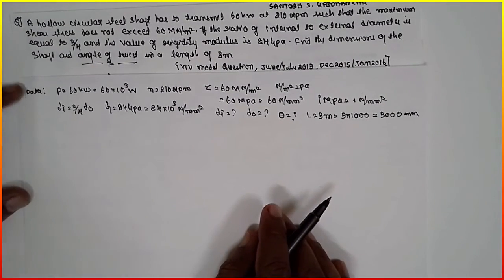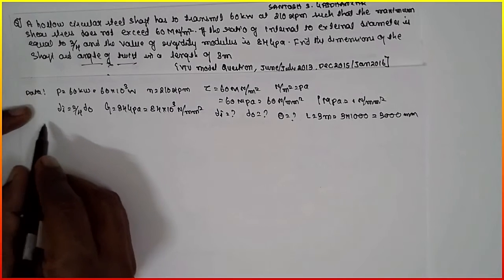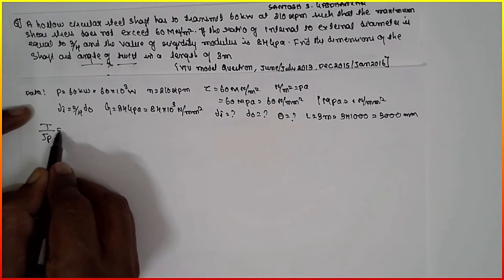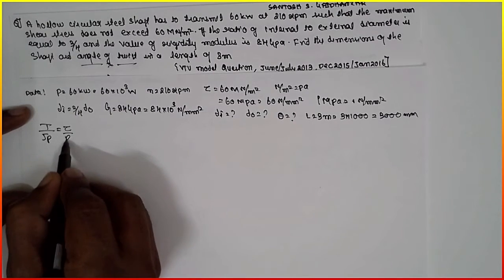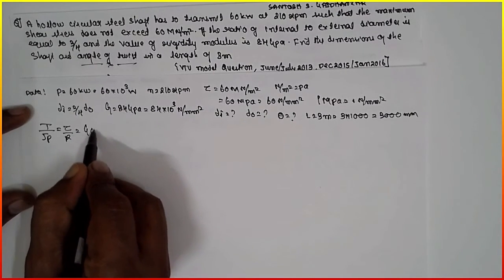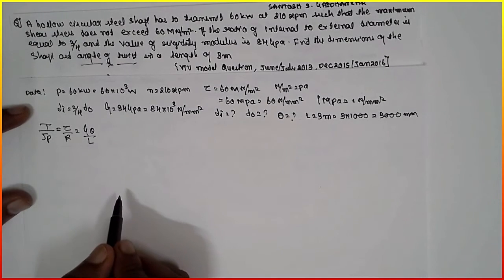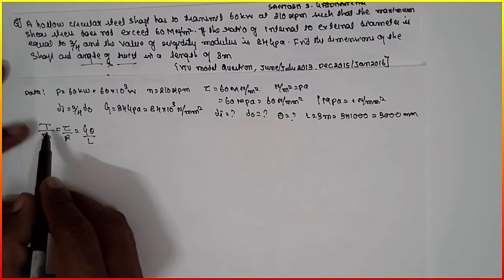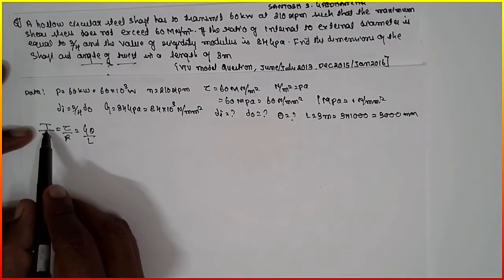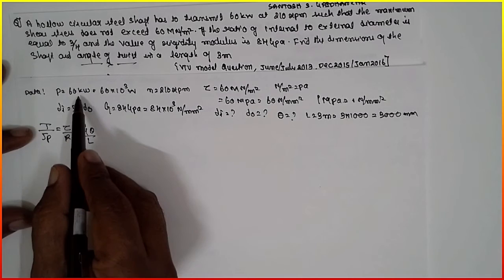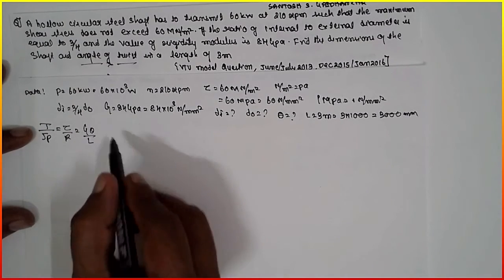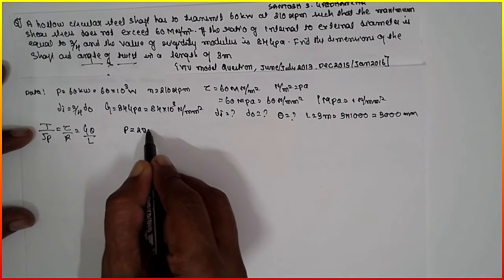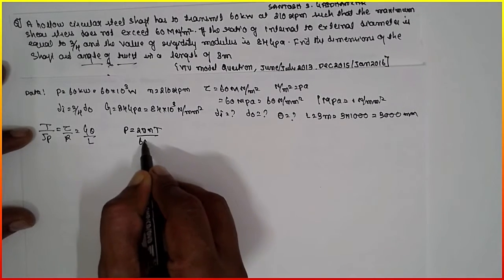Now by using the formula, T divided by Jp is equal to tau by R equals G theta by L. This is the formula we have to use to find out the torque. We can't find the torque directly, but the power is given. From the power we can find out the torque.